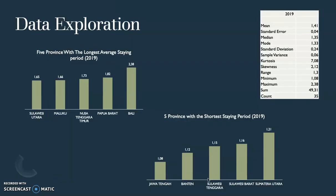And this is the result that I did based on my data exploration. I did some countings on the data summary. I find the mean, the median, mode and so on, but I only did it for 2019. I can also probably do it for each year — 2017 and 2018 — and then do some comparison based on the statistical measurements. And then I tried to make a chart on five provinces with the longest average stay and then five provinces with the shortest stay. Based on these charts, I can try to make some analysis: why are these provinces with the longest stay, why are these provinces with the shortest stay, and if I want to increase the stay, what should I do? So those are what you can do based on your data summary.